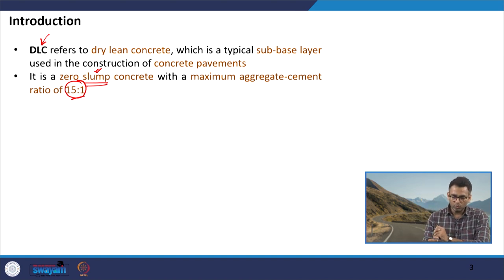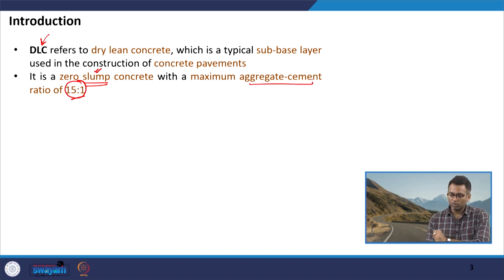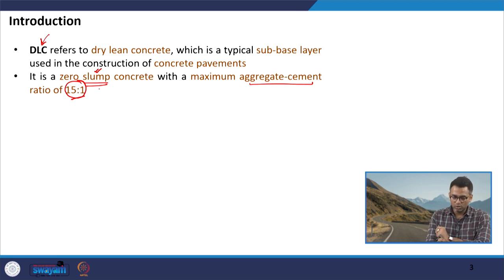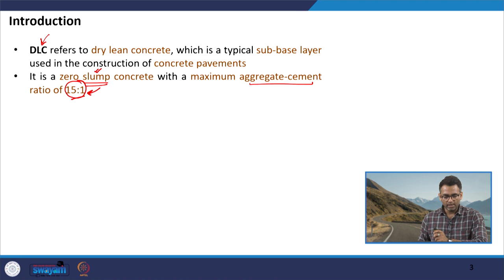In PQC we talked about the water-to-cementitious material ratio, but in the mix design of DLC we talk of the ratio in terms of aggregate to cementitious material ratio. This is an important ratio to remember for the production of dry lean concrete.